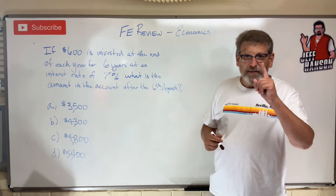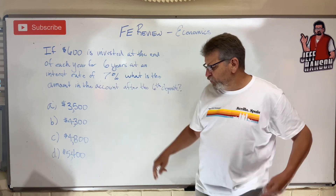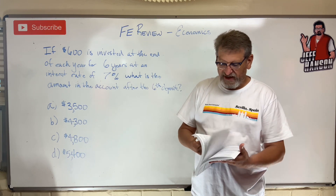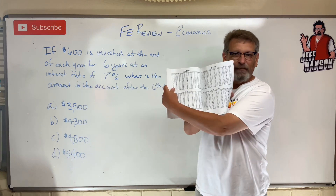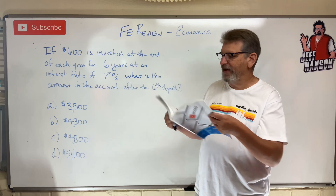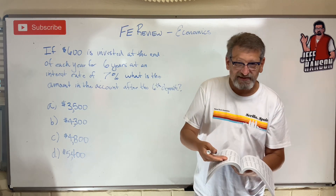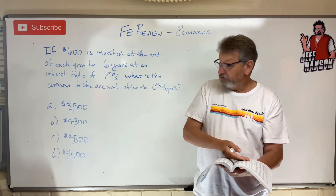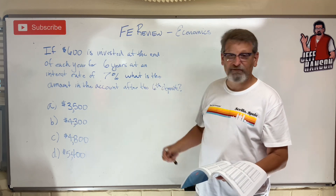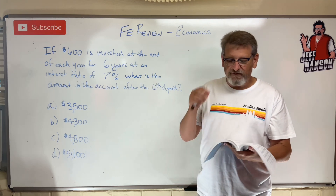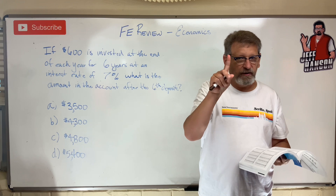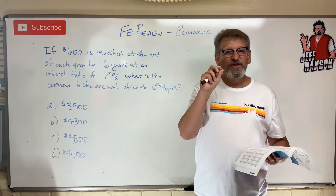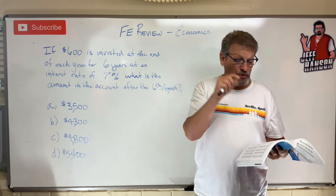Let's see if we can do it. Number one: 7% is a bit unusual — it's not in our tables, is it? In your reference manual you have an 8% table and a 6% table, but no 7% table. So when the tables are only 1–2% apart from each other, you can just use interpolation with the tables.